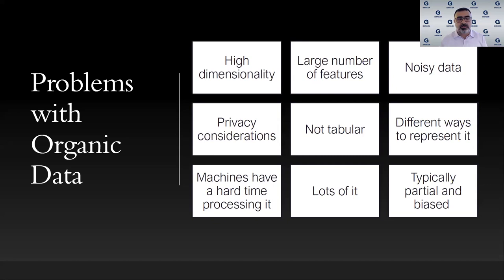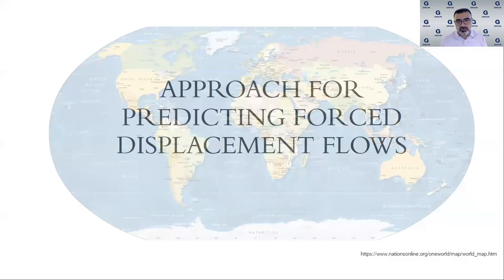Of course, these data are not without problems. Known issues with organic data include that it is high-dimensional — requiring good computational capacity — and it may be noisy, partial, and biased, among other issues. This is not to say we can ignore these problems; it is ongoing research to deal with some of these aspects. But it can be quite useful when blended with traditional sources of data.